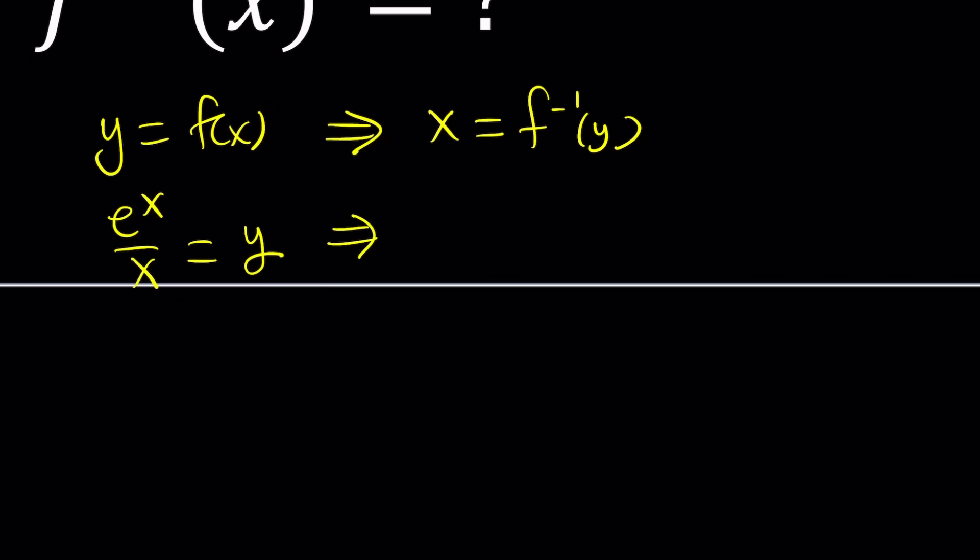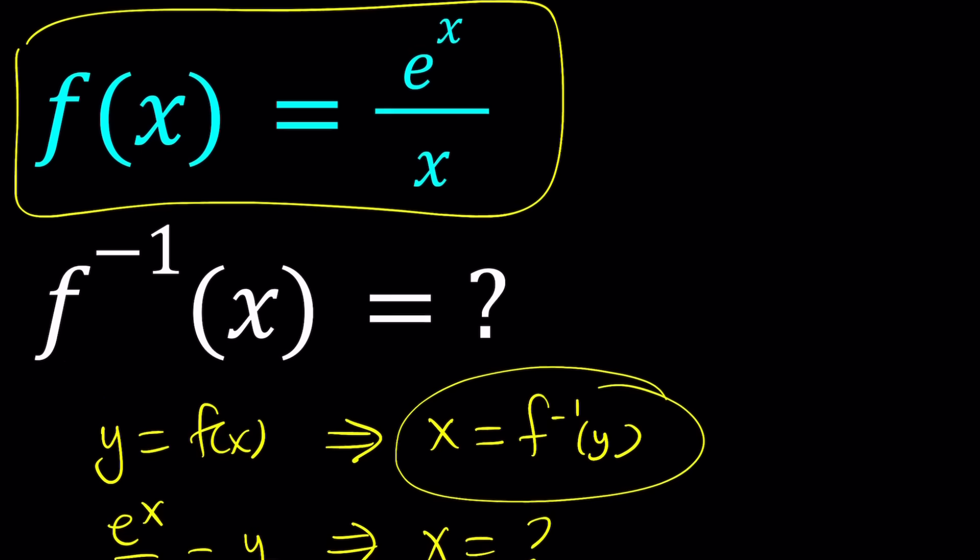So our goal is going to be how to solve for x. But notice that when you solve for x, that gives you f inverse of y, which is f inverse expressed in terms of y. And at the end, you can change that variable to x so that you can express f inverse in terms of x. Make sense? Because that's what we're being asked.